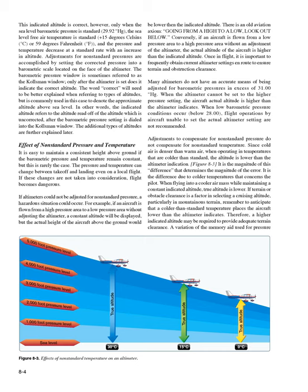1. Indicated altitude — read directly from the altimeter, uncorrected, when it is set to the current altimeter setting. 2. True altitude — the vertical distance of the aircraft above sea level, the actual altitude, often expressed as feet above mean sea level (MSL). Airport, terrain, and obstacle elevations on aeronautical charts are true altitudes. 3. Absolute altitude — the vertical distance of an aircraft above the terrain, or above ground level (AGL). 4. Pressure altitude — the altitude indicated when the altimeter setting window is adjusted to 29.92 Hg; the altitude above the standard datum plane where air pressure corrected to 15°C equals 29.92 Hg. Pressure altitude is used to compute density altitude, true altitude, true airspeed (TAS), and other performance data.